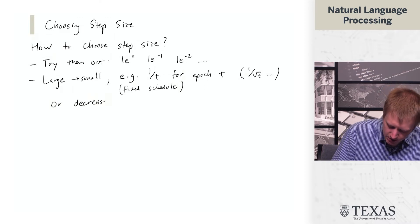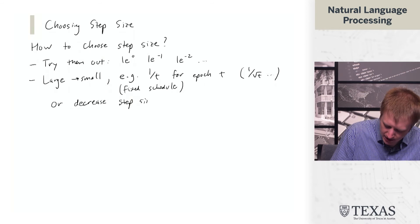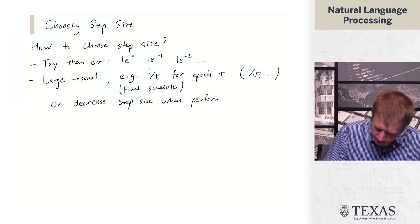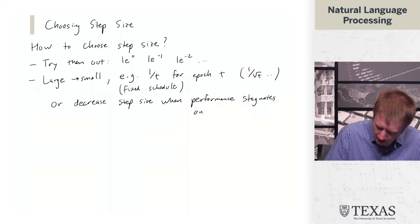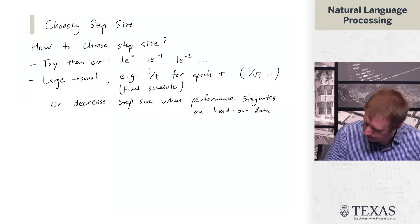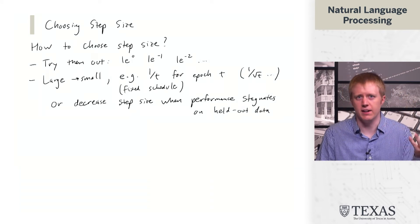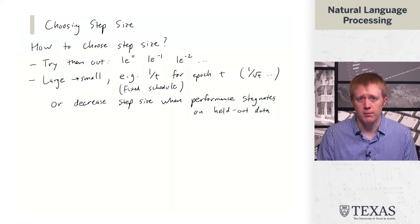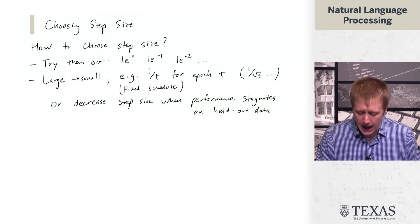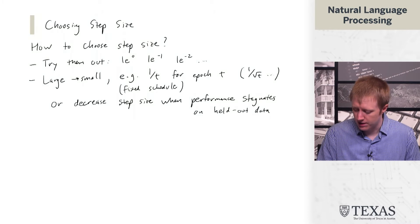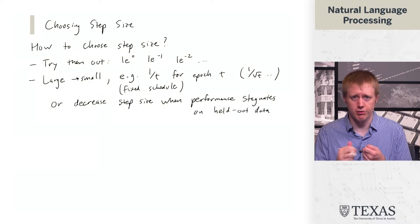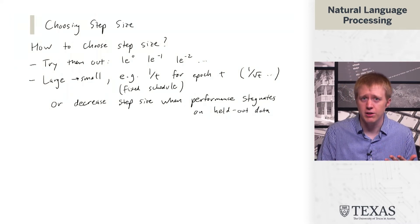Or you can decrease step size when performance stagnates on held out data. You look at when you're no longer making progress on your validation set or development set, both terms get used, and then you turn down the step size. These are coarse techniques, and it's a little bit hard to find exactly the right value for this thing.